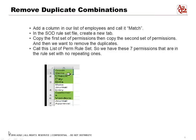We're going to add a column in our list of employees and call it 'match,' and in the SOD rule set file we're going to create a new tab. We'll copy the first set of permissions and then copy the second set of permissions, then remove all the duplicates. We'll call this the list of permissions in the rule set — we have seven permissions with no repeating ones.